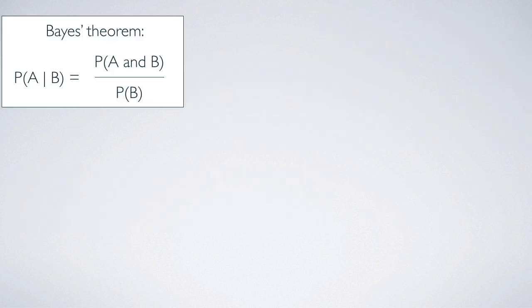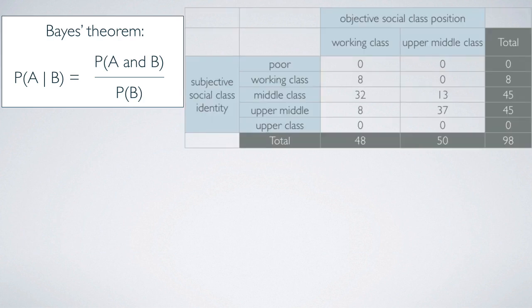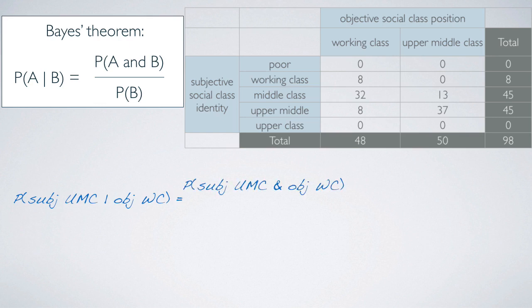More formally, we calculate conditional probabilities using Bayes' theorem, which states that probability of A given B is probability of A and B divided by probability of B — the joint probability in the numerator divided by what you're conditioning on in the denominator. Using the same dataset, the probability of subjective upper middle class given objective working class equals the joint probability of subjective upper middle class and objective working class divided by the probability of objective working class.